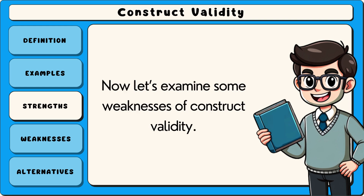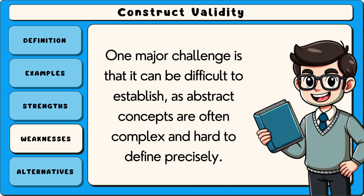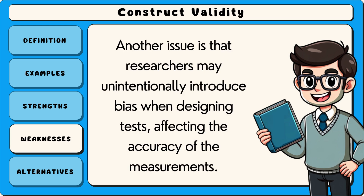Now let's examine some weaknesses of construct validity. Despite its importance, construct validity has some limitations. One major challenge is that it can be difficult to establish, as abstract concepts are often complex and hard to define precisely. Another issue is that researchers may unintentionally introduce bias when designing tests, affecting the accuracy of the measurements.